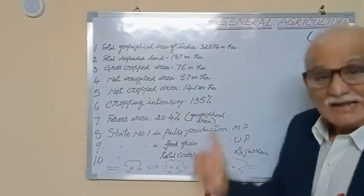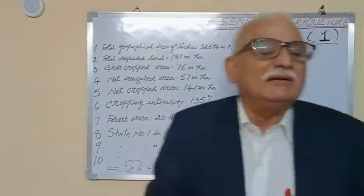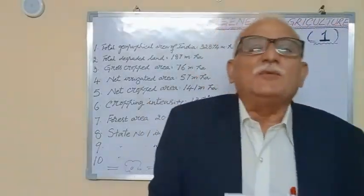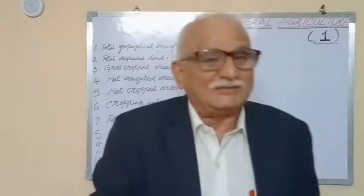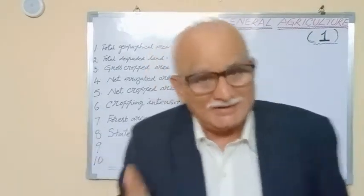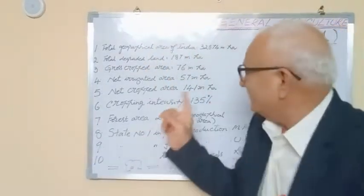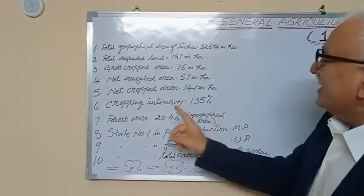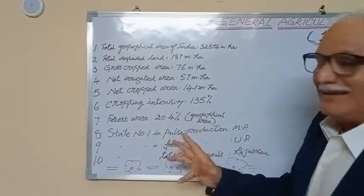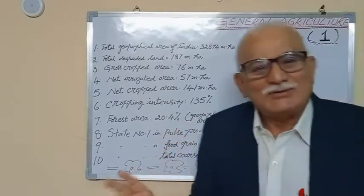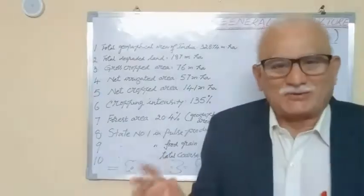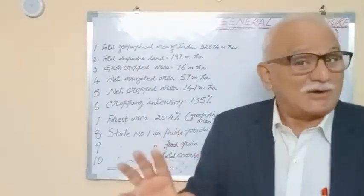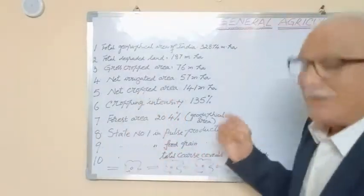Cropping intensity — this bit is certain to come — is 135%. Forest area is 20.4% of the total geographical area.